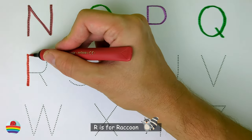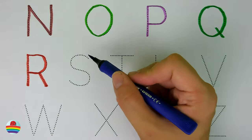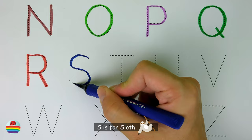R. R is for raccoon. R. S. S is for sloth. S.